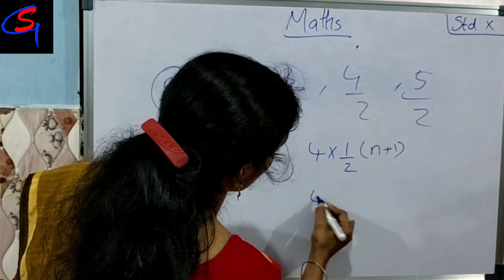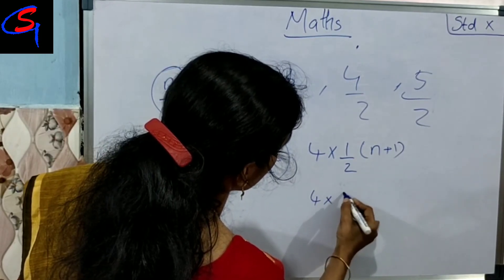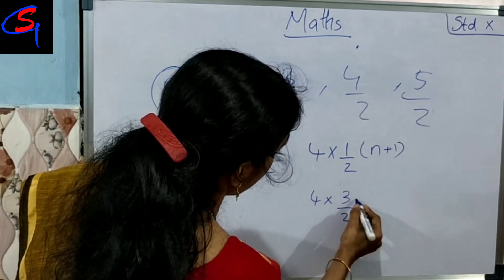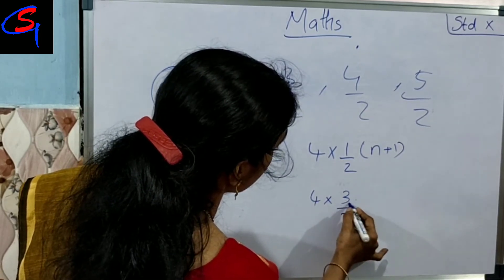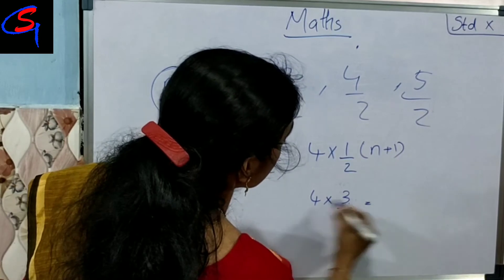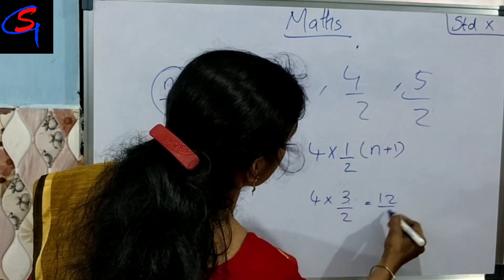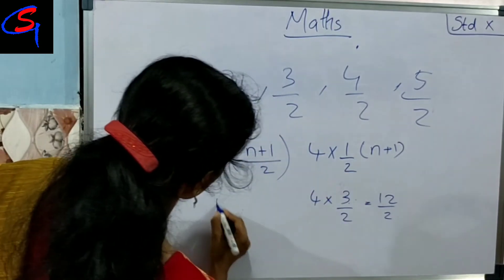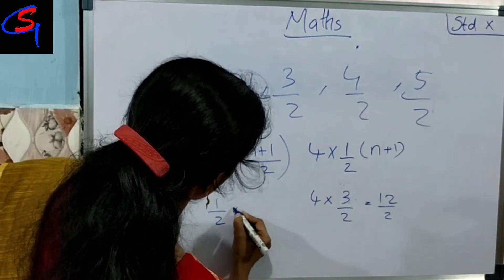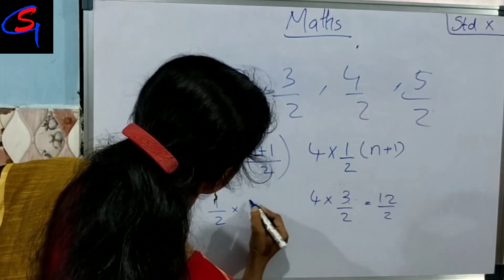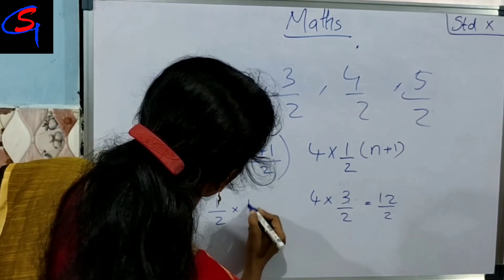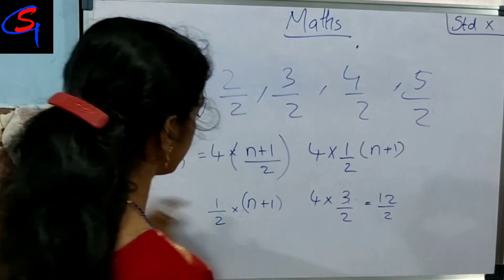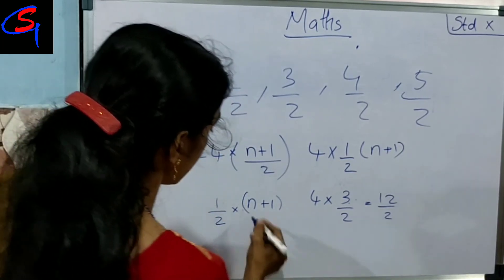How do you start? 4 into 3 by 2. We will start this. 5 into 1 by 2 into n plus 1. Now this is the 1. The 1 is the 1. The 1 is the 2.